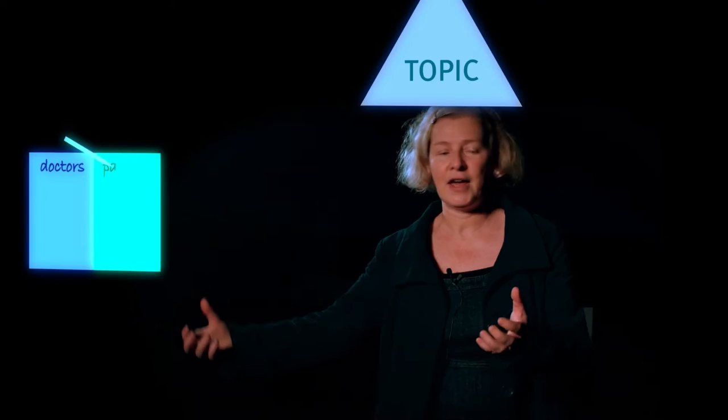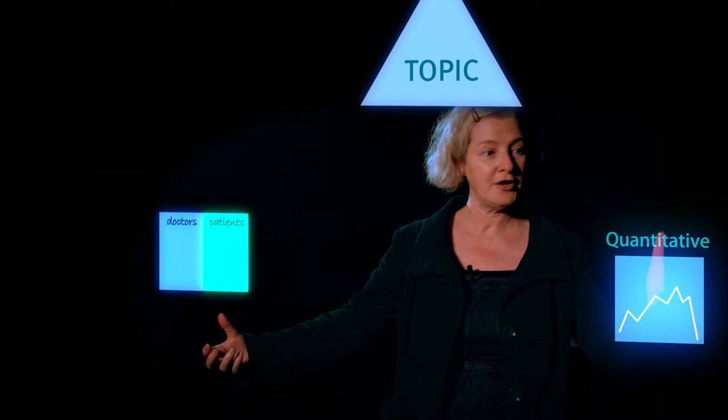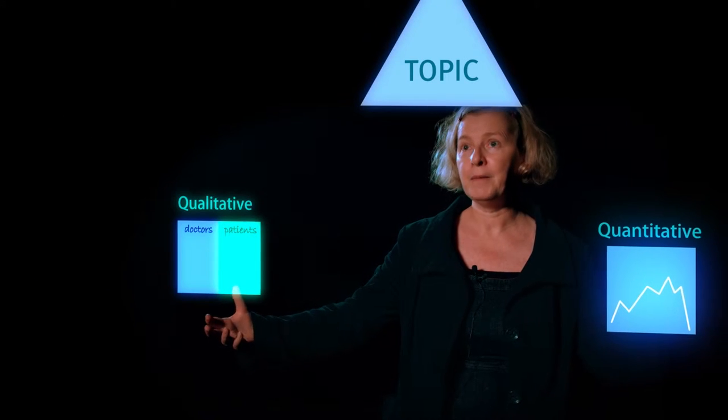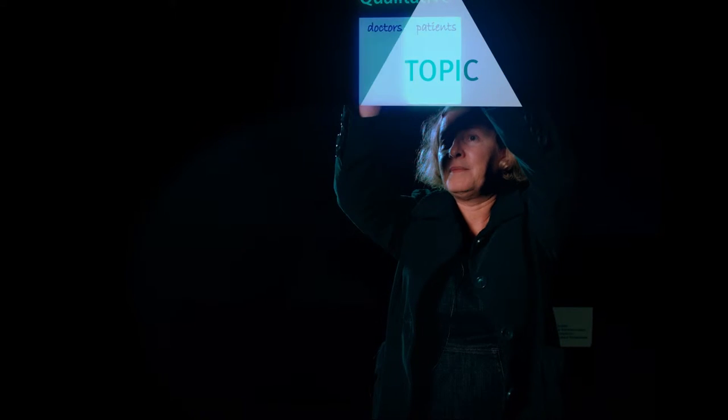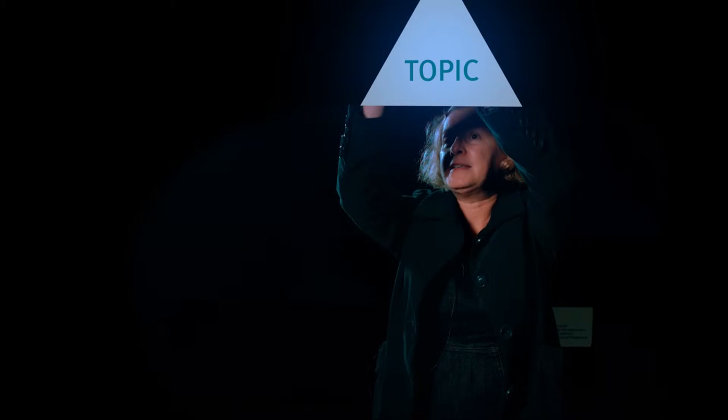The whole concept of triangulation is that by using qualitative research (one part of the triangle) and quantitative research (another part), you focus on a research topic (the third part). You understand more about that research topic because you've looked at it from two directions in two different ways.